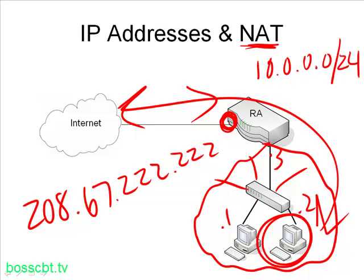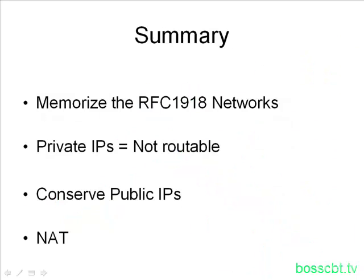The benefit here is your company really only needs a small block of public IPs, yet they're not encumbered with not having access to the rest of the world. So that's the basic concept of private IPs and NATing. Don't get too caught up on the details of NAT for now — we cover that in detail in other tutorials. To summarize: private IP address space, RFC 1918, you really just need to memorize those three network ranges. Private IPs are not routable over the Internet, and one of their uses is to conserve public IPs. Combined with network address translation, this allows us to be more efficient in our use of public IP address space.